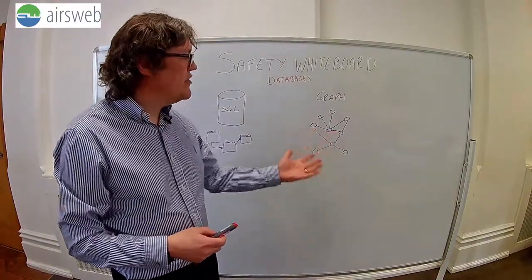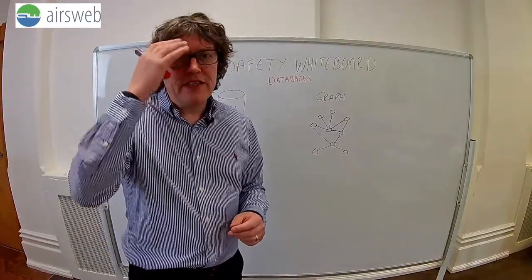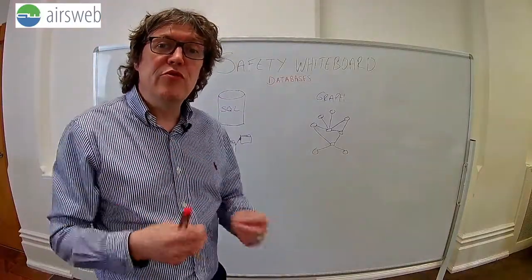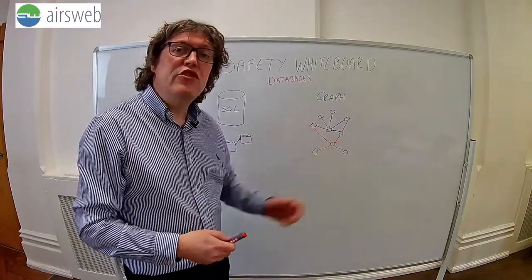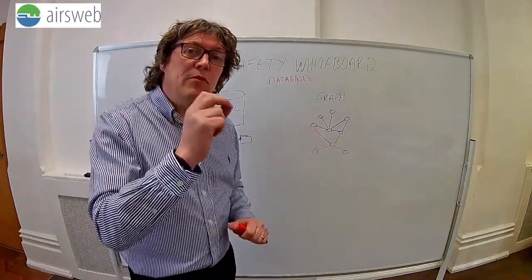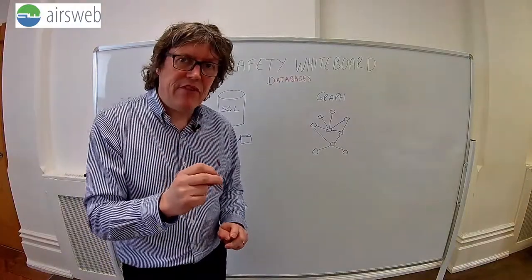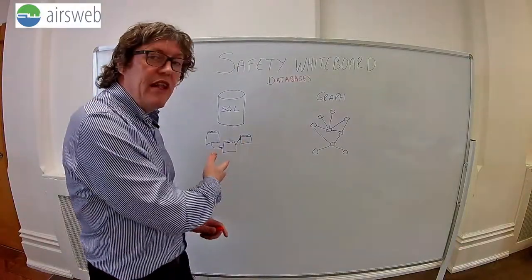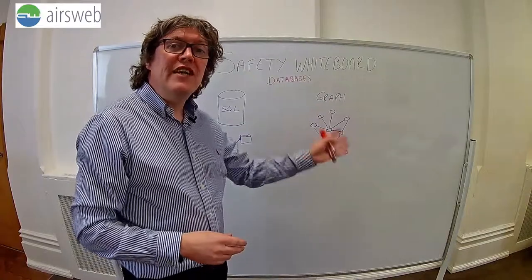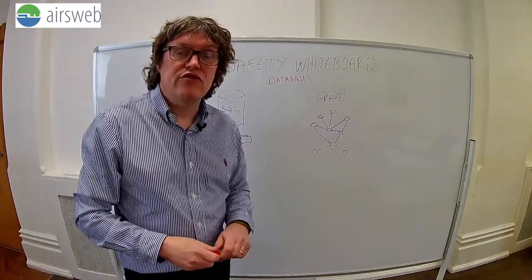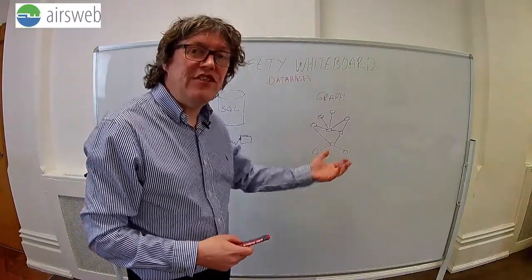Whereas graph, on the other hand — and you can see by the diagram — is very much what's called node based. You have nodes that relate to each other with behaviours. The key with graph databases is that the actual behaviours, the relationships, are at the data level. They're not at the table level. That's as technical as I'm going to get. But it allows you to have a much more dynamic structure. It's very easy to add relationships and very easy to add nodes.